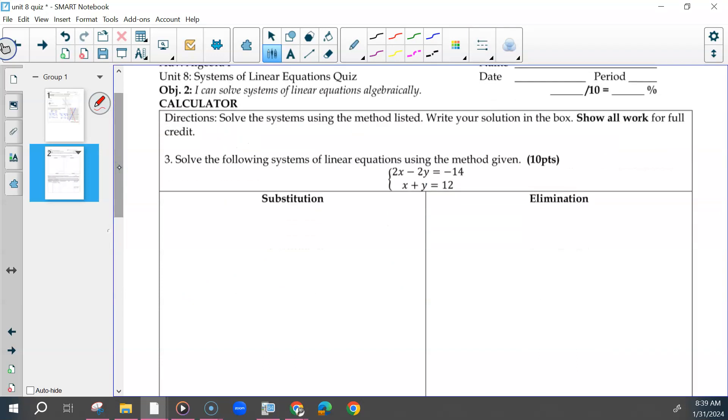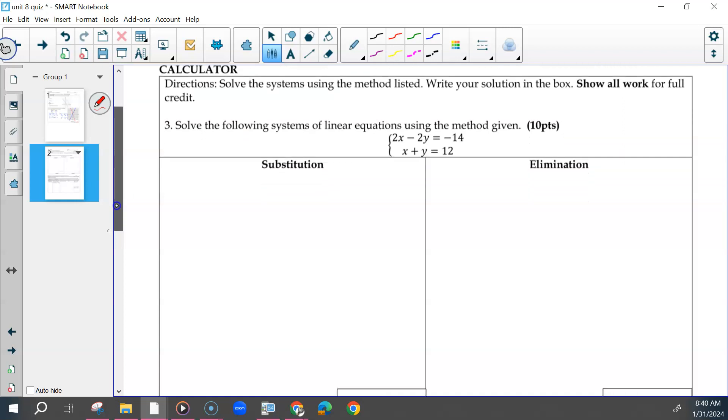Alright, for substitution elimination, you could have substituted and eliminated a bunch of different ways. So what I do may not be what you did, and that's okay. You don't need to change or erase anything. For substitution, there were different ways to do this. You could have solved for x or y in this one, but you also could have solved for x or y in this equation because you would have had whole numbers.